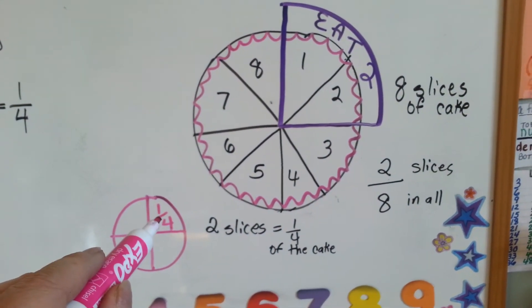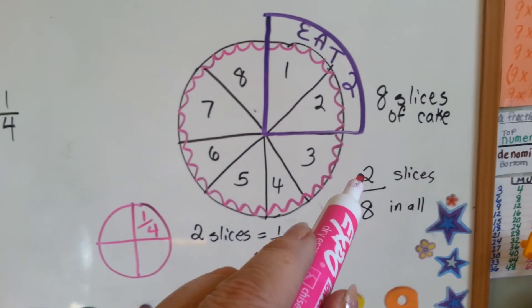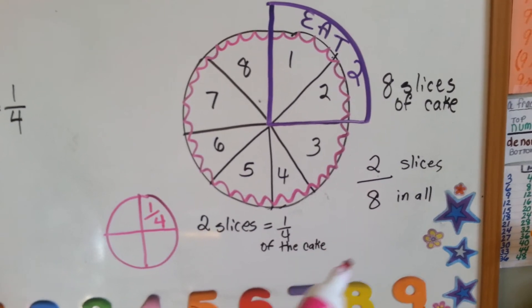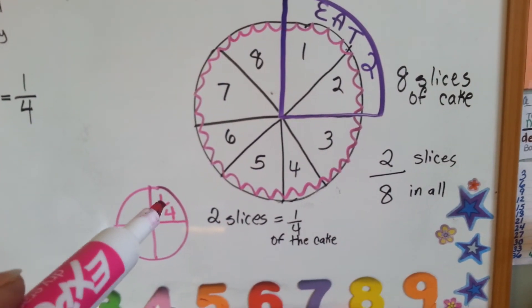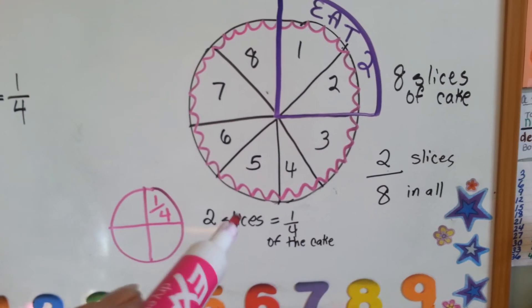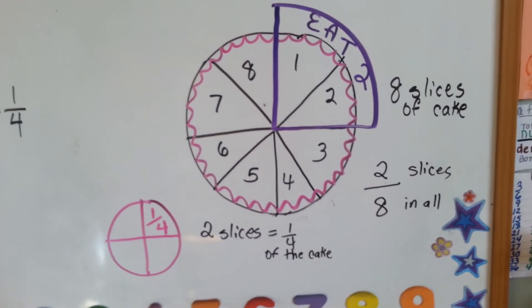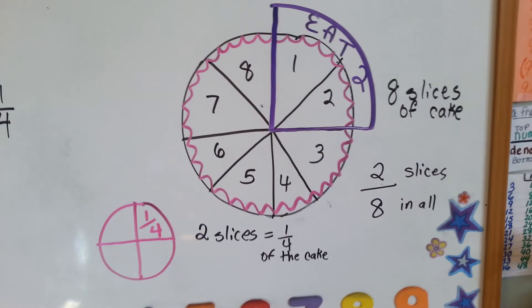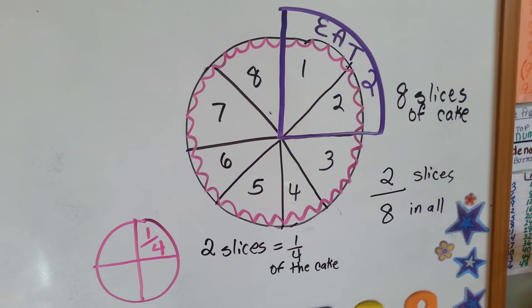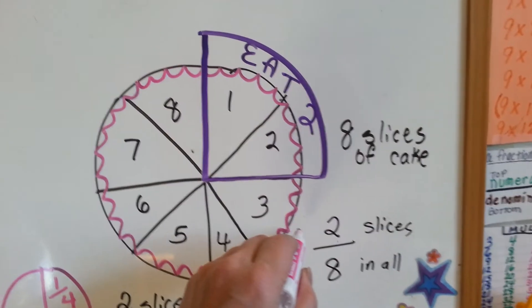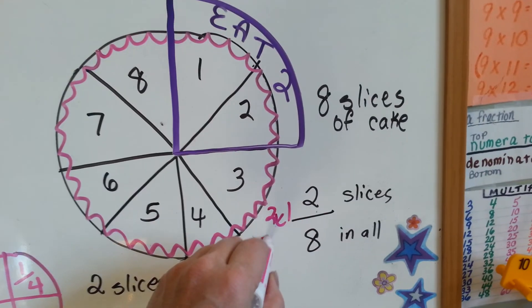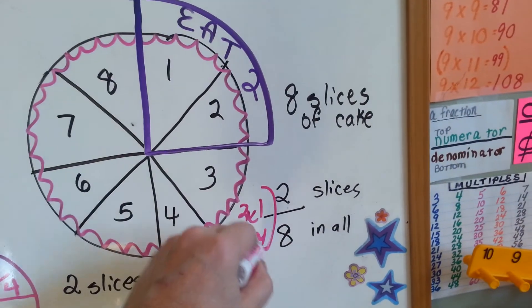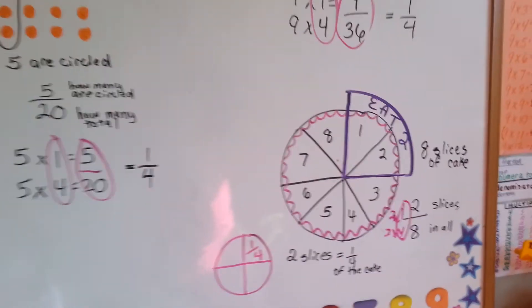That means you're going to eat a fourth of them. Two slices of cake, when there's eight slices in all, is two-eighths. Two-eighths is equal to one-fourth of the cake. That's two slices. And there's four sections. So two-eighths is equal to one-fourth. Two times one is two, and two times four is eight. And so you get your one-fourth.